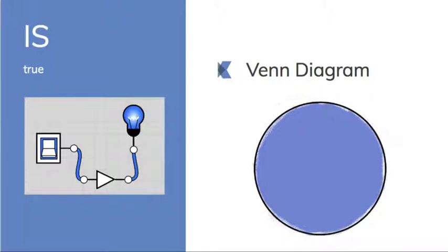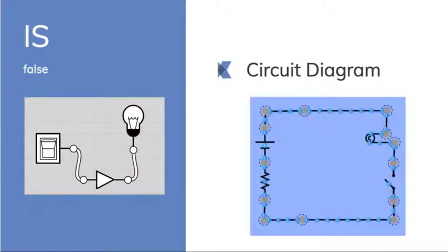So if we look at the Venn diagram, the circle is blue. If it's in the circle, it's in the circle. If it's not in the circle, it's not the thing.